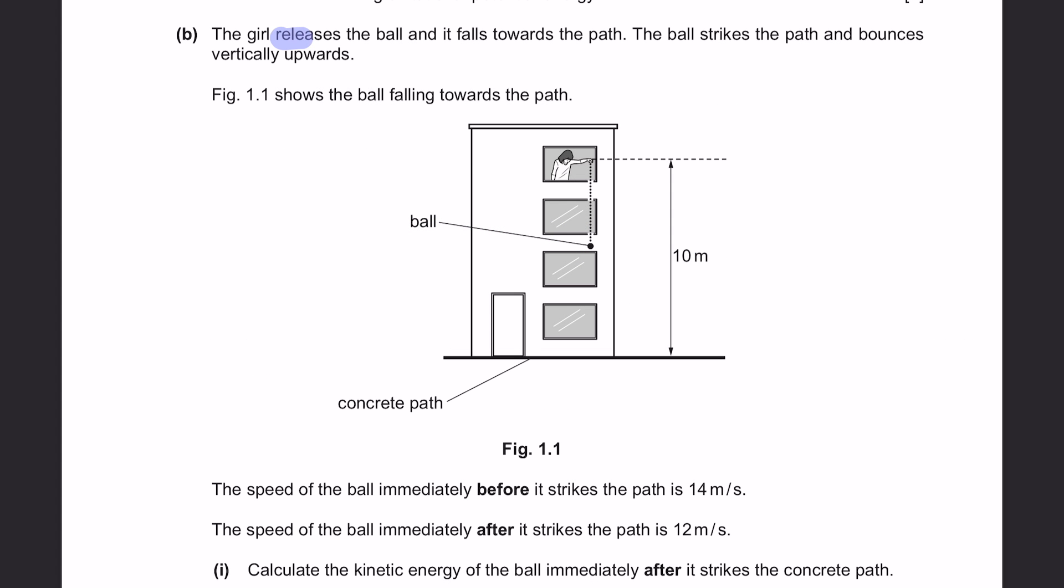Question B. The girl releases the ball and it falls towards the path. The ball strikes the path and bounces vertically upwards. So meaning that the ball fell down. When it hit the ground, it bounced upwards. The speed of the ball immediately before it strikes the path is 14 meters per second. So the initial velocity here is 14 meters per second. And the speed of the ball immediately after it strikes the path is 12 meters per second.